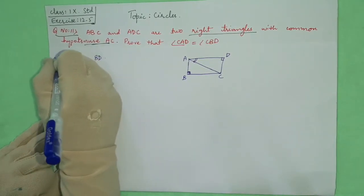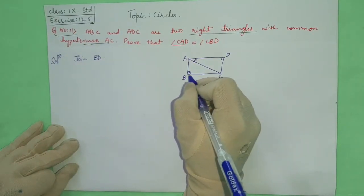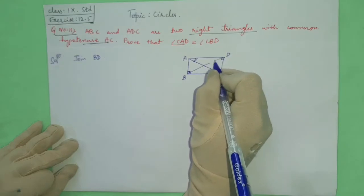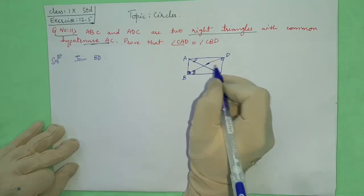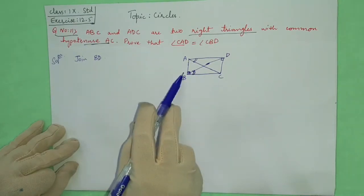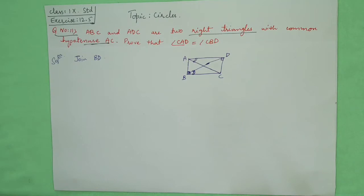So what we want to do? Firstly we are joining BD so that we can get the required angle. If we join both here, this angle will be CBD. So CBD is equal to CAD. This we have to prove in this question.